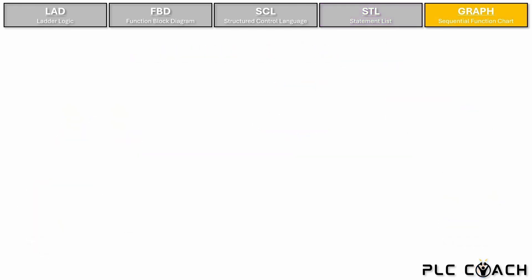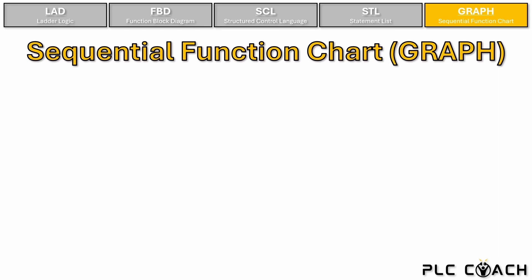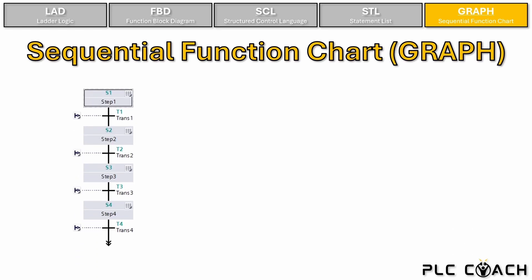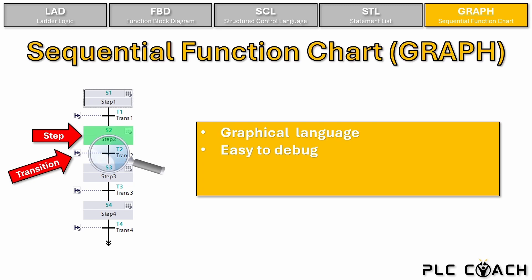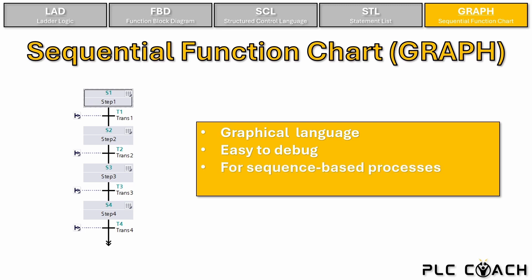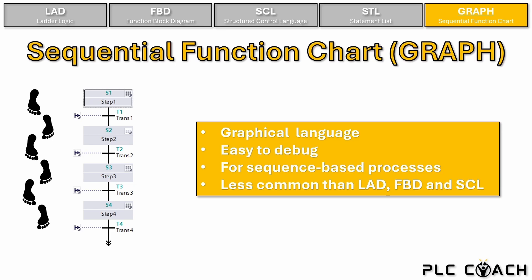Let's now take a look at the last language in our toolbox: Sequential Function Chart, in the Siemens universe also known as S7 Graph. Graph is another graphical programming language designed for sequencing processes. A program in Graph consists of steps and transitions. A step might activate a motor while a transition defines the condition that must be true to move to the next step. This makes Graph very easy to debug — in online mode, you can clearly see which step is currently active and check which condition hasn't been met. However, Graph is not suitable for every application. It is not good for Boolean logic, complex calculations or non-linear processes. This language is designed for linear sequences — everything which can be divided into single steps. As a result, Graph is much less commonly used than LAD, FBD or SCL. Only learn it if you have to.